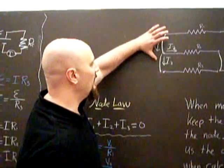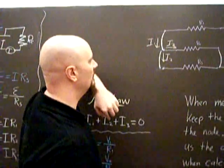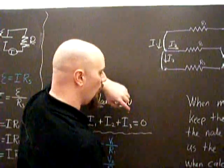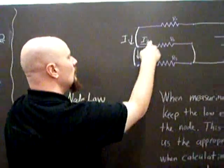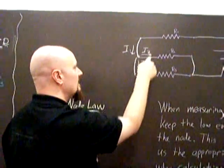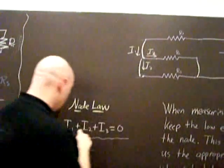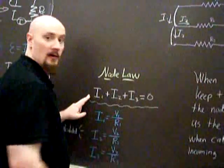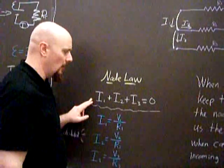So in one case it's going in. In two cases it's going out. So right away we know that these two should have a different sign than this. In other words, if this is positive, these need to be negative because when you add them together, they should equal zero. The node law.